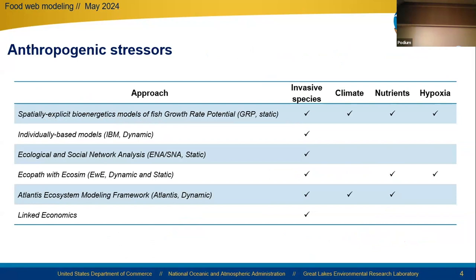Outlined in this table is how we have used these models for understanding the effects of invasive species, climate change, nutrient loading, and hypoxia. Note that some of these models provide a snapshot, or static picture, of a system at a particular time period while others are dynamic. Further, all six of our modeling approaches have addressed the issues of invasive species — both those currently in the lakes and those with high probability of invading the Great Lakes.